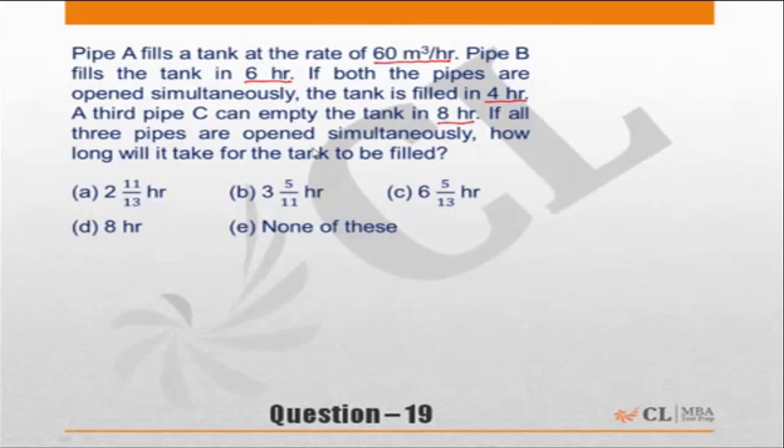As per the question, pipe A fills the tank in, we don't know, so let me assume in X hours, and its rate of filling is 60 cubic meters per hour. Pipe B fills the tank in 6 hours. If both pipes are open simultaneously, the tank fills in 4 hours. A third pipe C can empty the tank in 8 hours, so I'm just putting minus 8 to indicate it empties the tank. If all three pipes are open together, how long will it take for the tank to get filled up?